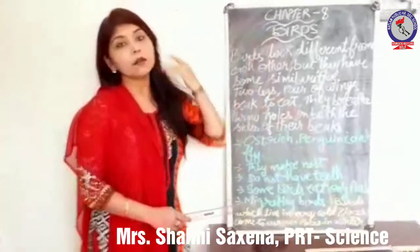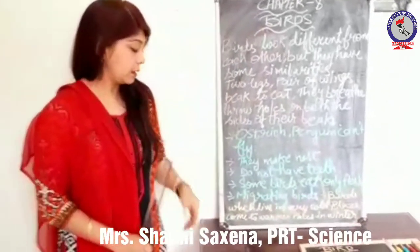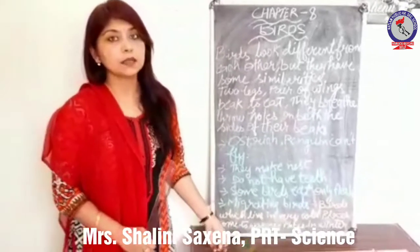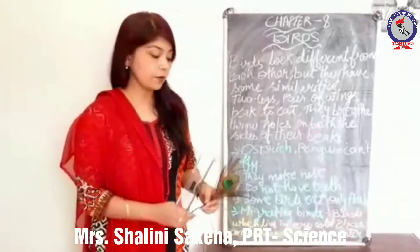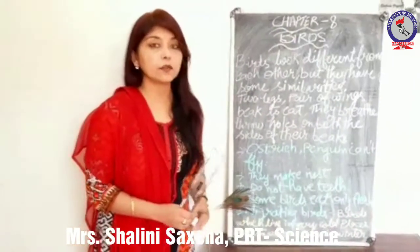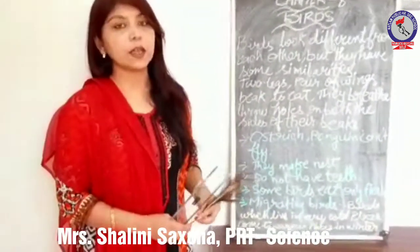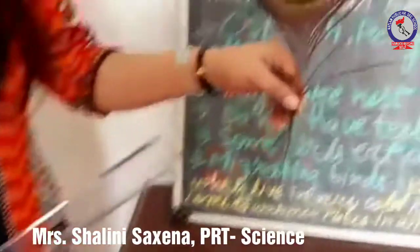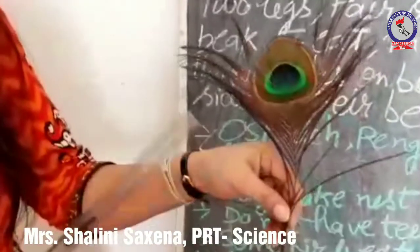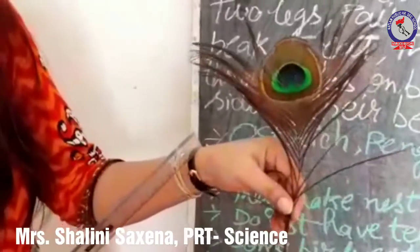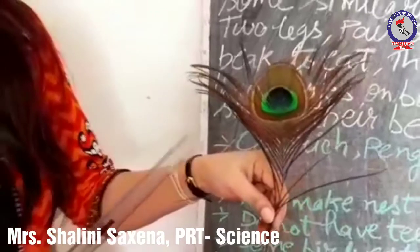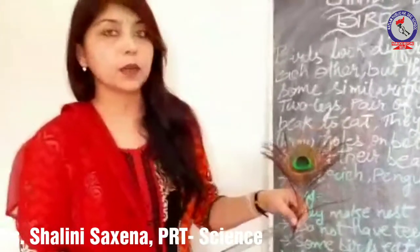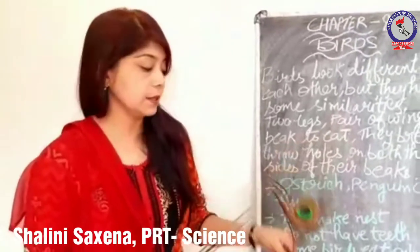Some birds have feathers of the same color, but some birds have different, colorful feathers by which we can identify them. For example, this is the feather of a peacock, and we can recognize birds by their feathers.